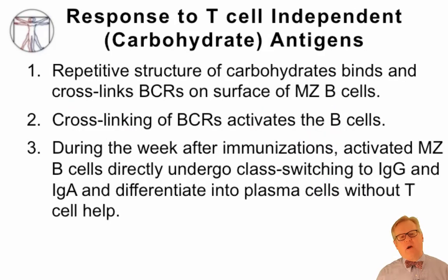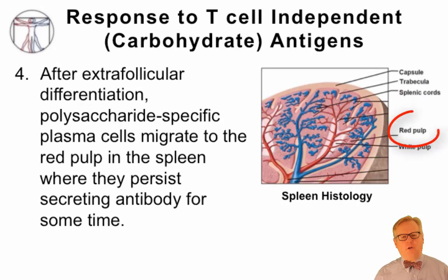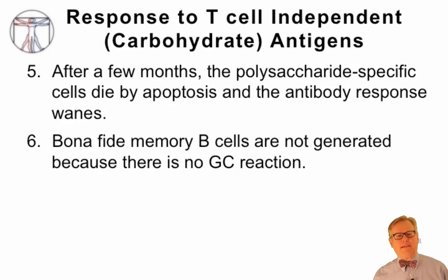By cross-linking B-cell receptors, carbohydrate antigens activate the marginal zone B-cells, which begin to grow and divide. Over the course of about a week, these cells develop into plasma cells, some of which undergo immunoglobulin class switching from IgM to IgG and IgA without requiring T-cell help. These plasma cells migrate to the red pulp in the spleen where they live and continue making antibody for some time — often several months — after which they undergo apoptosis and the antibody response wanes. Because these plasma cells don't require T-cell help and don't go through a germinal center reaction, they don't develop bona fide B-cell memory, and responses to carbohydrate antigens don't persist for long periods.